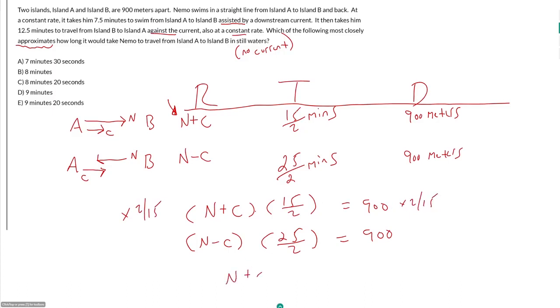So we get N+C is equal to 900 times 2 over 15. I can break up 15 into 3 times 5, then I get 300 here. 300 over 5 is 60, so this is just 120. This is Nemo with the current—the rate of Nemo with the current. Our unit here should be meters per minute. N+C equals 120 meters per minute.